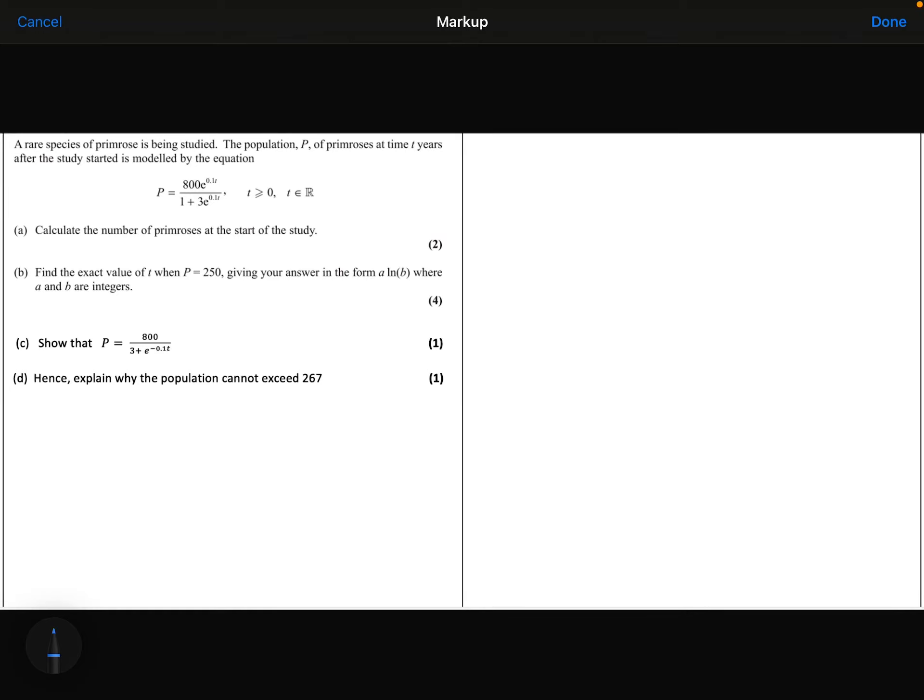A rare species of primrose is being studied. The population P of primrose at time t years after the study started is modeled by the equation given there. Part A, calculate the number of primroses at the start of the study.